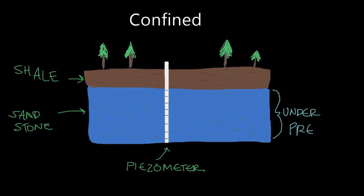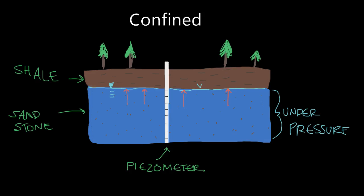The overlying confining bed is causing this water to build up pressure inside the aquifer. So let's look at our water table in the confined aquifer — it's right at that contact between the overlying shale and the sandstone. We know this water is not going to rise up through the shale, because the shale isn't going to transmit water like the sandstone will. Instead of rising into the shale, it's just going to build pressure against that contact. So the water table is limited to that contact — it's not going to rise above it.